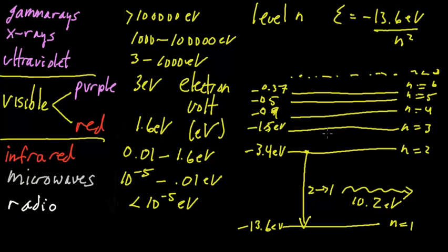So let's do another example. So if we go from, let's say, n equals 3 to n equals 2. This is going from negative 1.5 to 3.4. And that releases light. And that light is about 1.9 eV. And 1.9 eV is in the red. So I probably should redo this little arrow here. So that's red light.